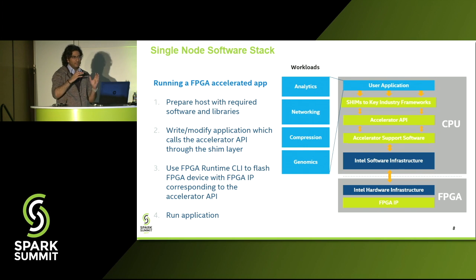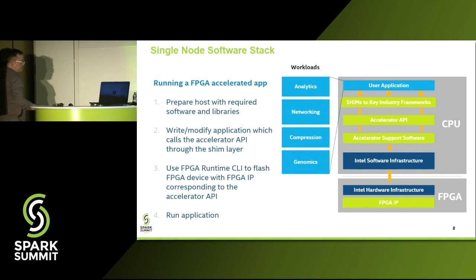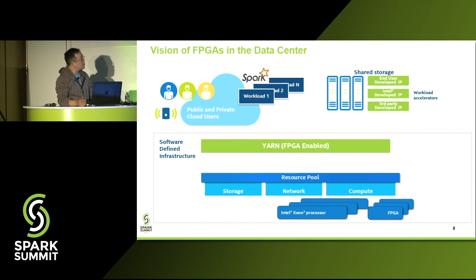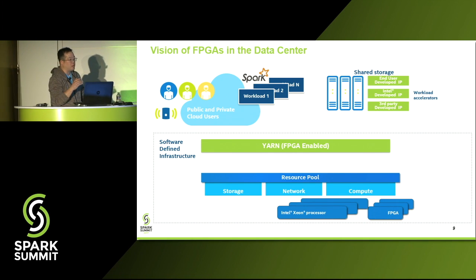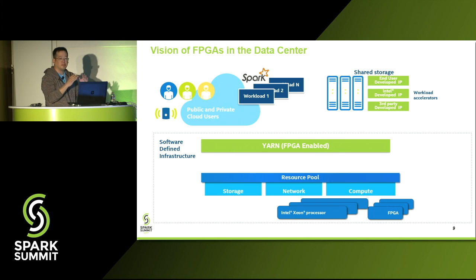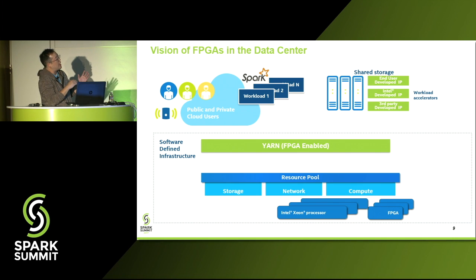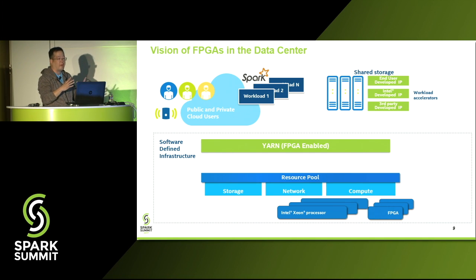Now that we have a single node, how do we upscale it? I'll let my colleague Zhongyue take over. To offload a workload onto FPGA, the prerequisite is to first flash the FPGA device with the appropriate IP. For a single node it is easy to manage. However, for a distributed platform like Spark to leverage FPGA, the challenge is to dynamically flash the pool of FPGA resources that the Spark application will run on.